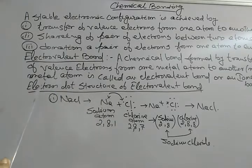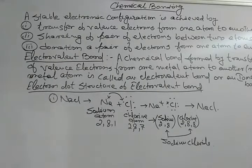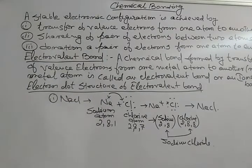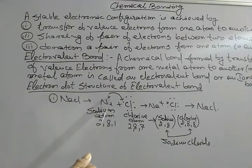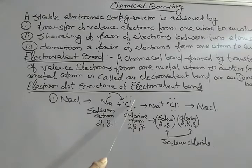I am explaining the bonding through the electron dot diagram. The dot diagram is drawn using only the last shell of the element. Sodium has atomic number 11 and chlorine has atomic number 17. In sodium's last shell there is only one electron, so it can give one electron. In chlorine's last shell there are seven electrons, so it can accept only one electron. These two can therefore form a bond.